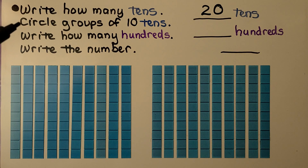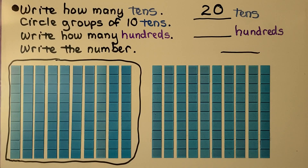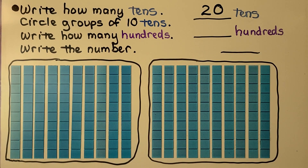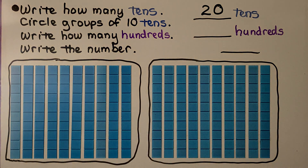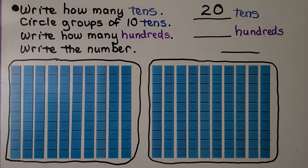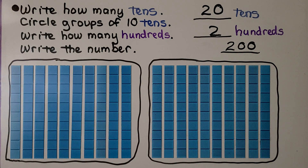Now we need to circle groups of 10 tens. Here's one group of 10 tens, and here's another group of 10 tens. 10 tens is 100, so how many hundreds do we have? We have two hundreds. We need to write the number — we write a two and a zero and another zero for 200.